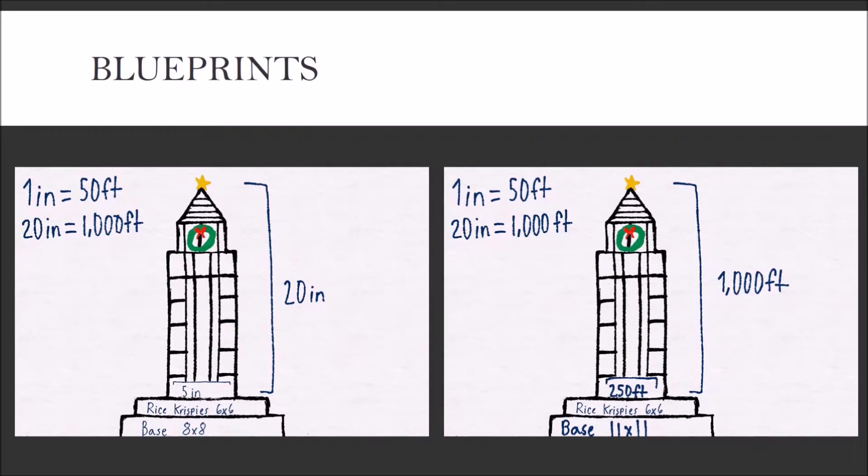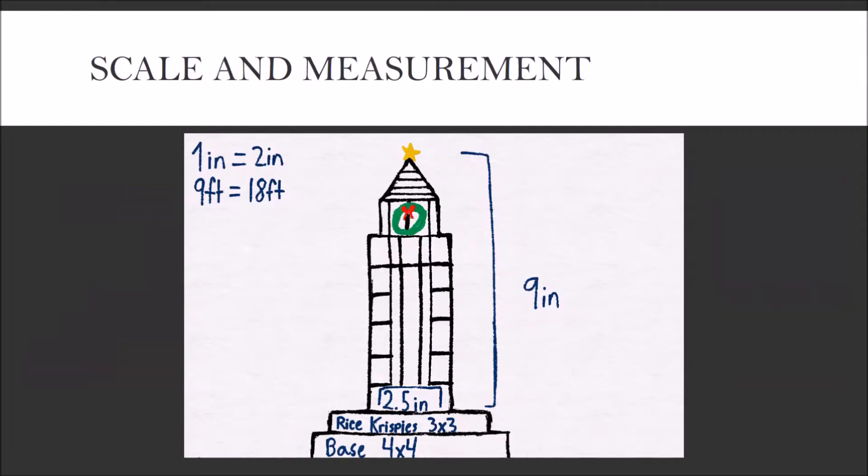The designers had to make some changes to the blueprint. Since the hotel stands at eighteen inches, the scale is now different. It's now one inch equals two inches and ninety feet equals eighteen feet.